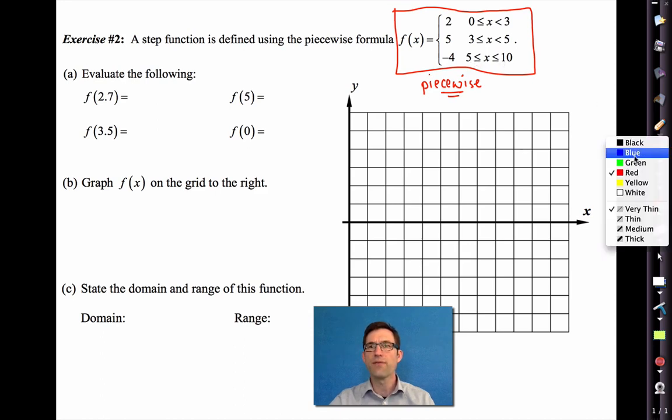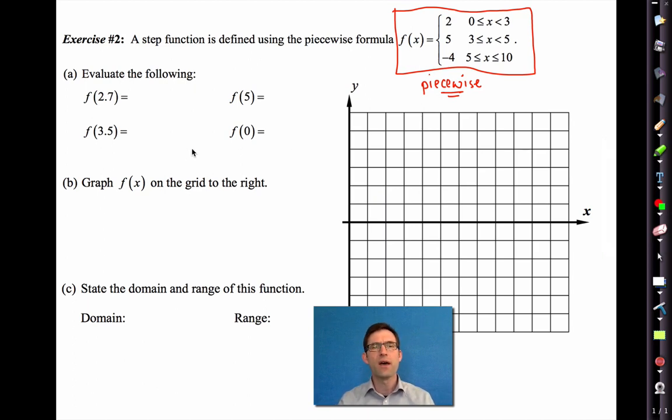So let's see if we can evaluate some of these function values. In fact, I'd like you to pause the video right now and see if you can do letter A based on what you know about function notation and piecewise functions. All right, let's do it. So f of 2.7. Remember how we read a piecewise function. We say, all right, well, the input's 2.7. Where does 2.7 fall? Ah, 2.7 falls somewhere between 0 and 3. So the function says that the output is 2 whenever the input is between 0 and 3.